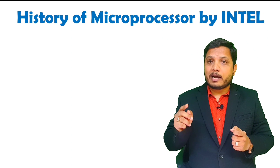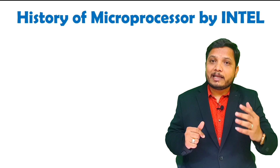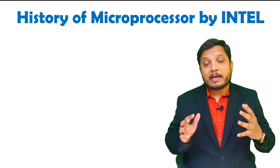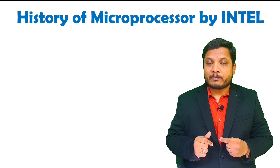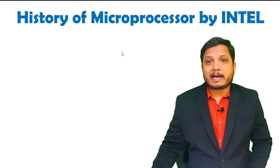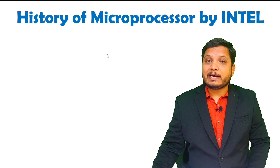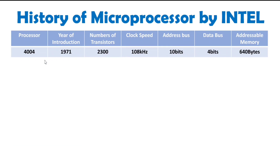In this video, I will be discussing the history by Intel. After that, I will tell you why we should be studying the 8085 microprocessor as well as the 8086 microprocessor. Let us start with the history: Intel designed its first microprocessor, the 4004, in 1971. That processor had 2,300 transistors integrated inside and a clock speed of 108 kilohertz.